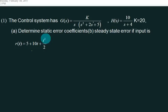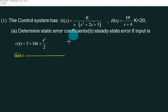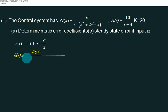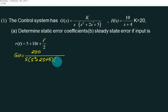First of all, you can collect GH. GH equals — you have to just multiply these two values, then put K equal to 10. So K into 10, this 10, this 20, and this 10 — is it 200? The denominator is s, is it s-squared plus 2s plus 5, into s plus 4.